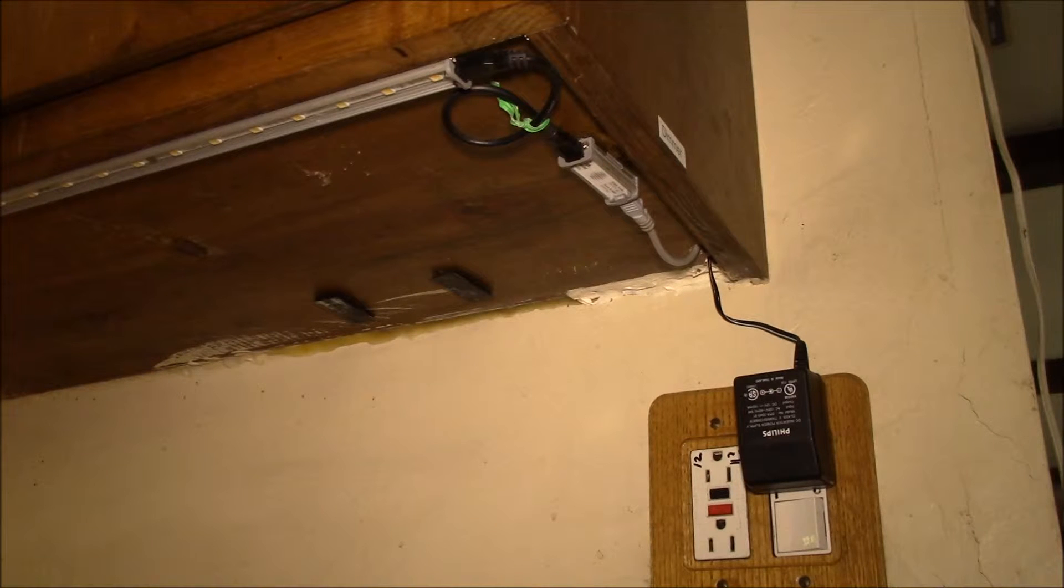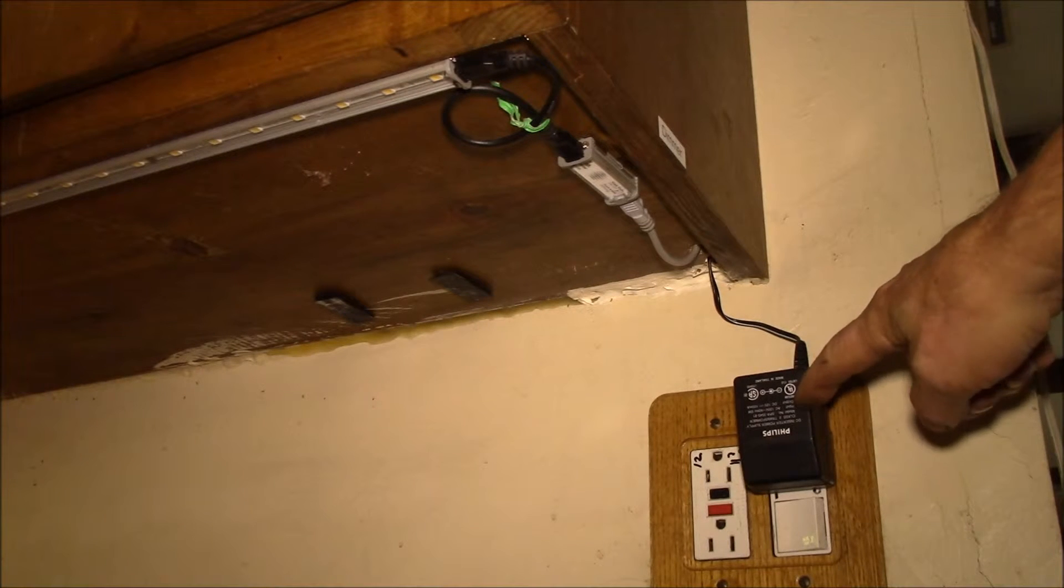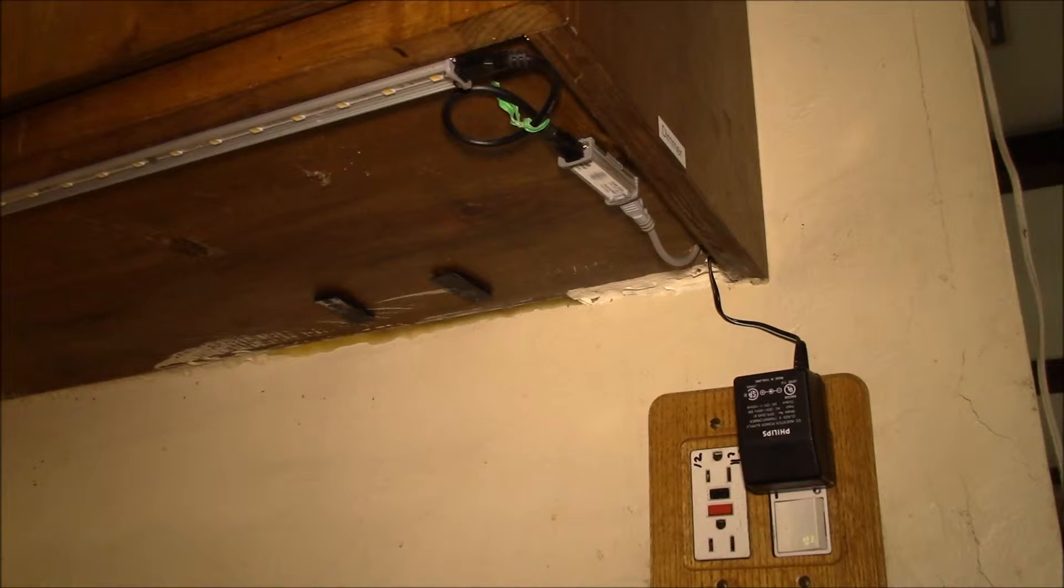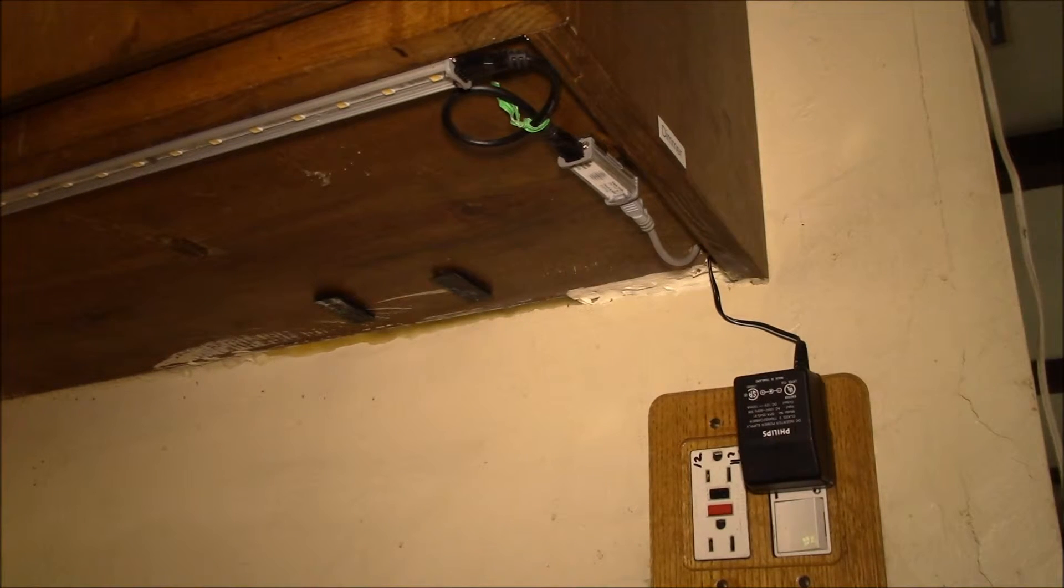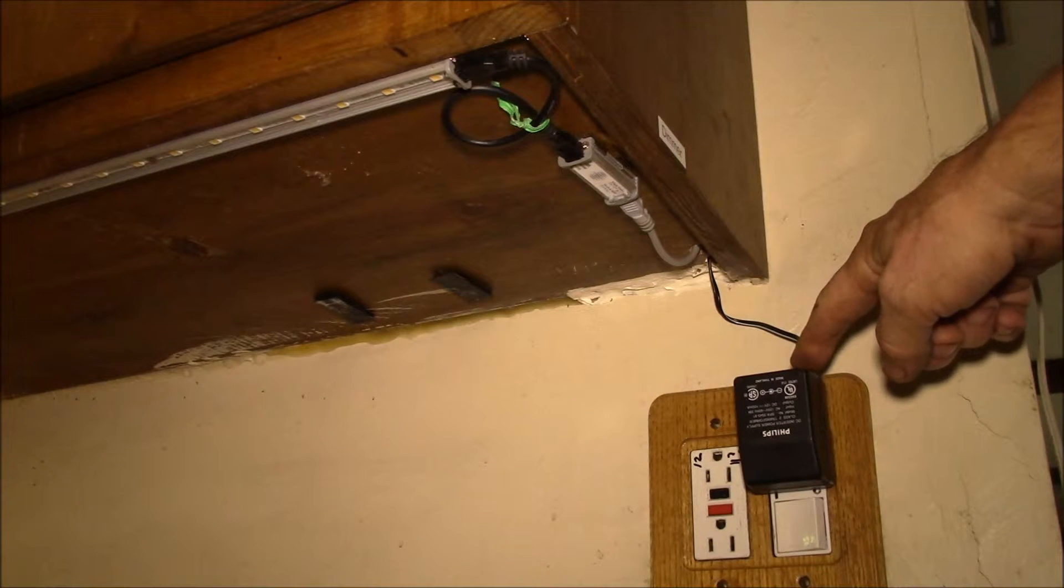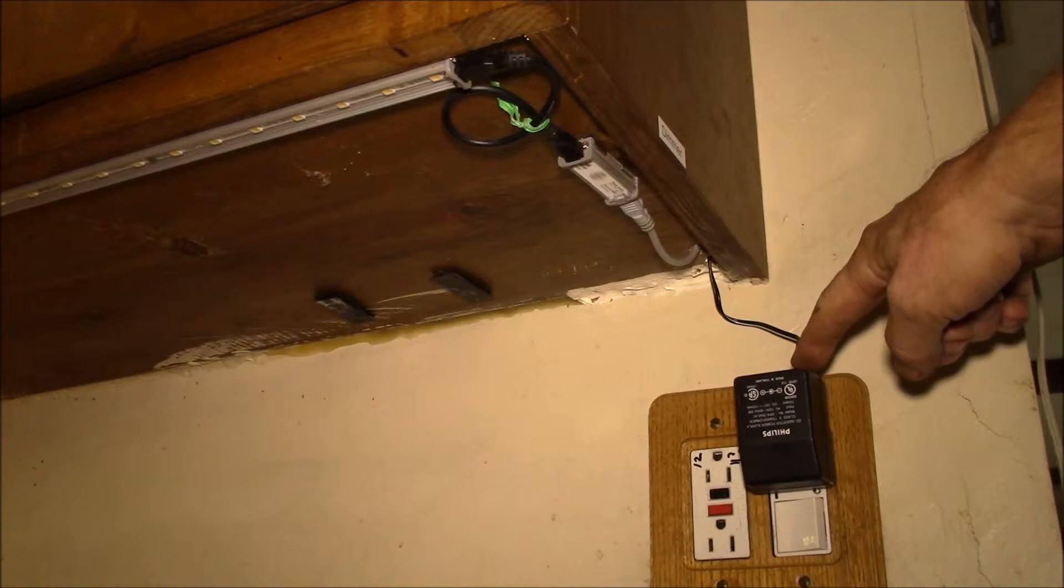puts out a hundred milliamps. So you might be asking how can I light my whole kitchen on 12 volts at a hundred milliamps - that's 1.2 watts. I've got six 5.5 watt MR16 bulbs being run by this one transformer. Well this transformer doesn't run the lights, all it does is turn on a relay.